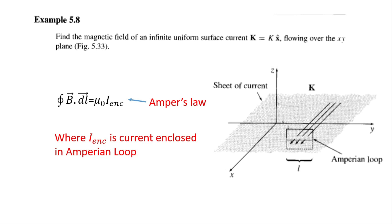Welcome to the course Electrodynamics 2. We will solve Example 5.8 in this video. Find the magnetic field of an infinite uniform surface current K = K x̂ flowing over the XY plane, figure 5.33.